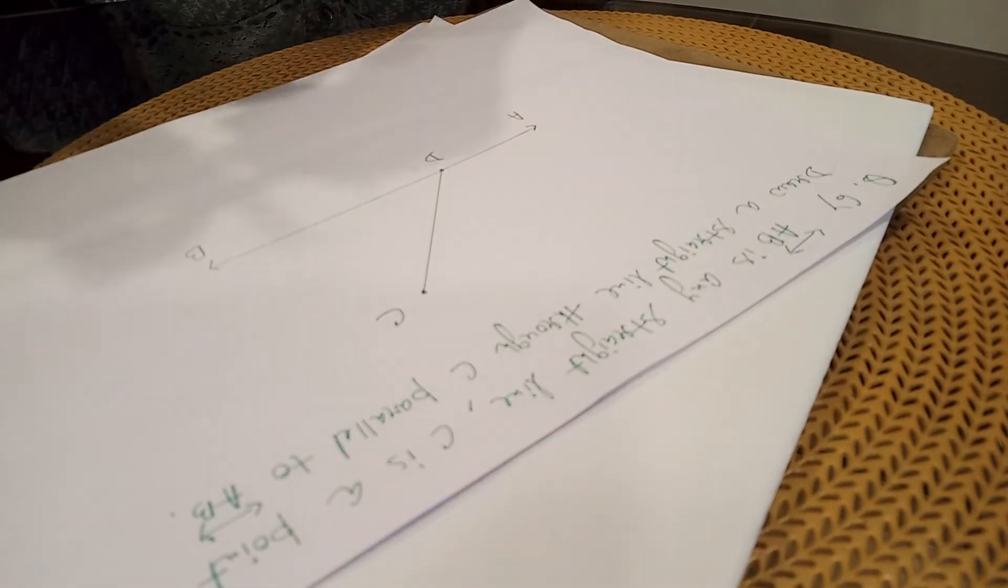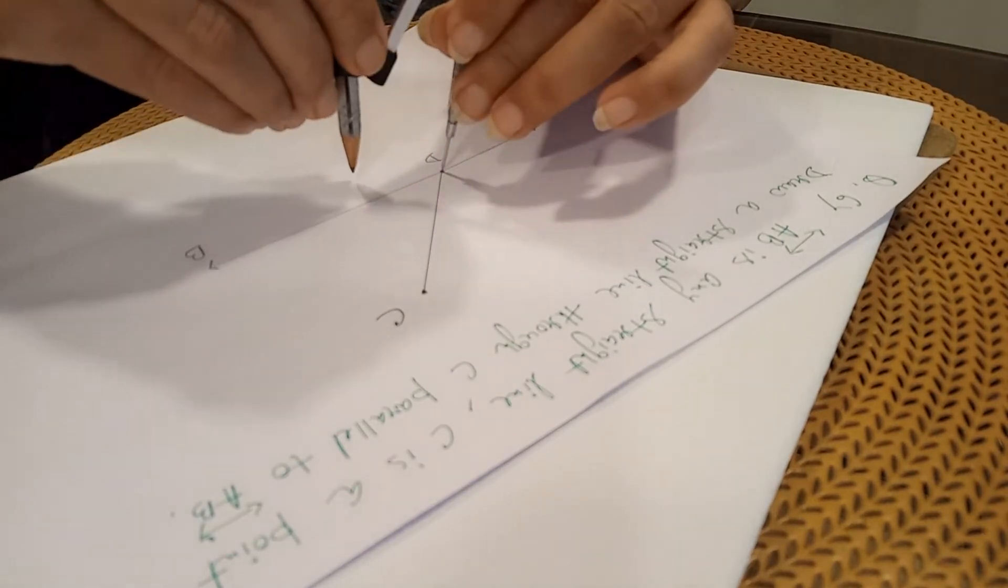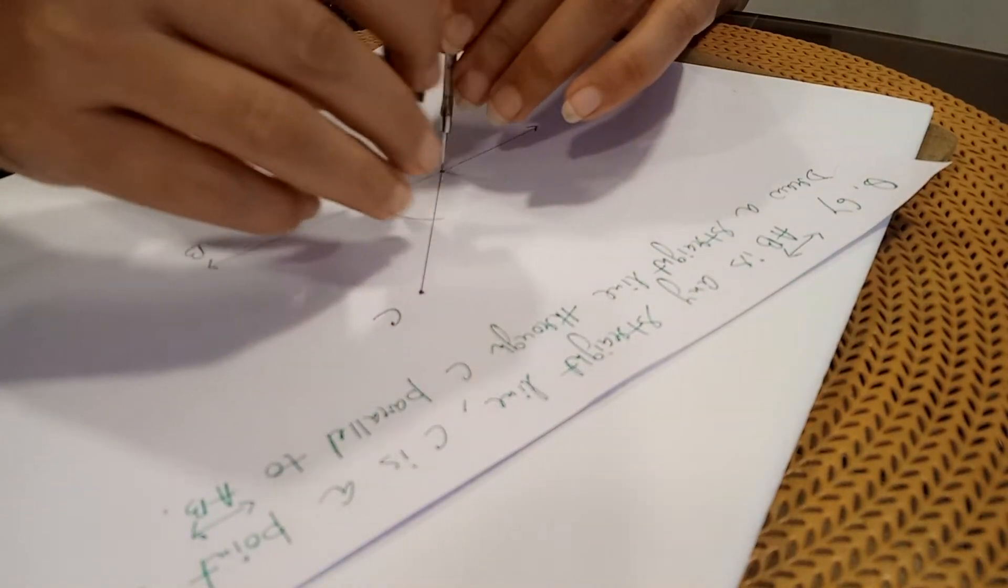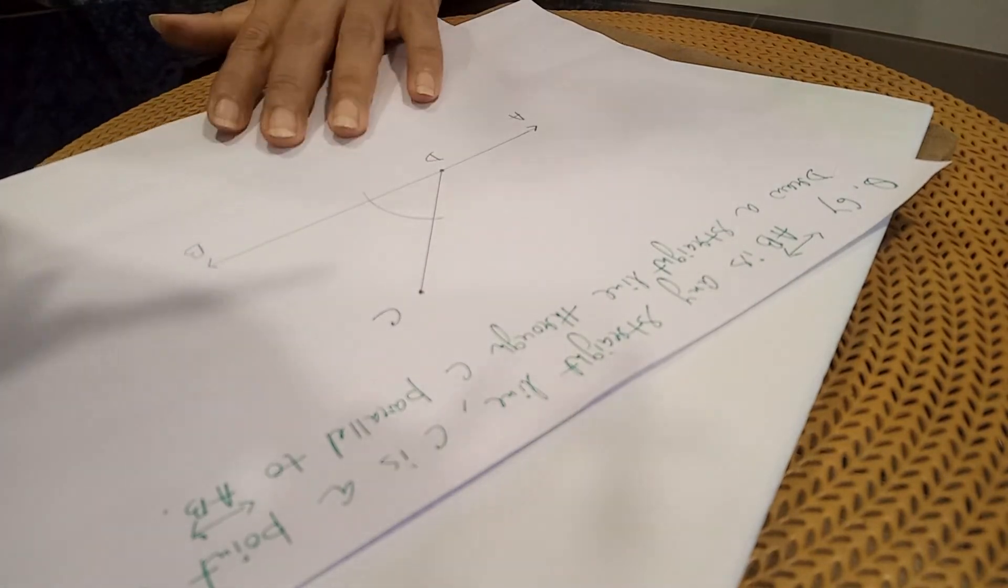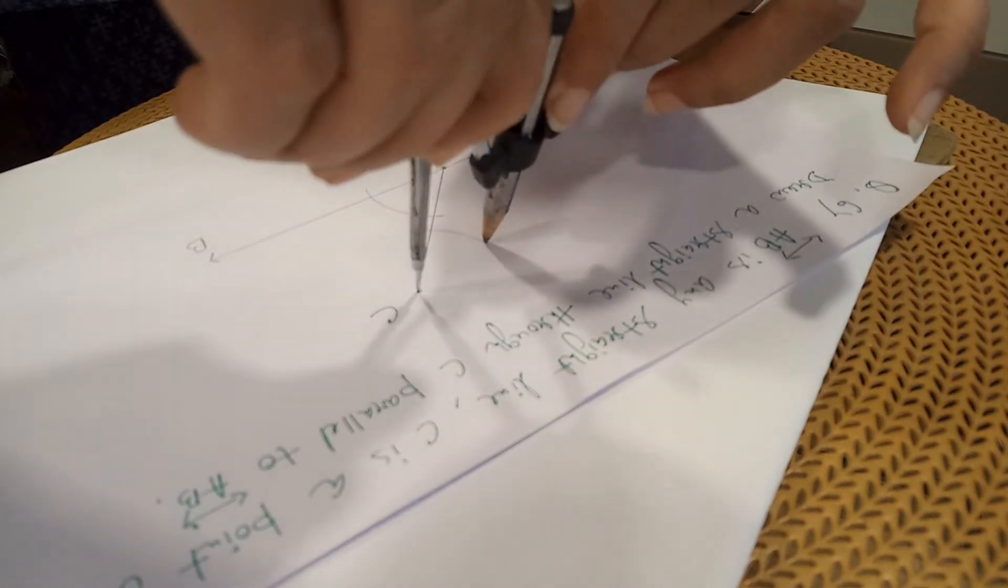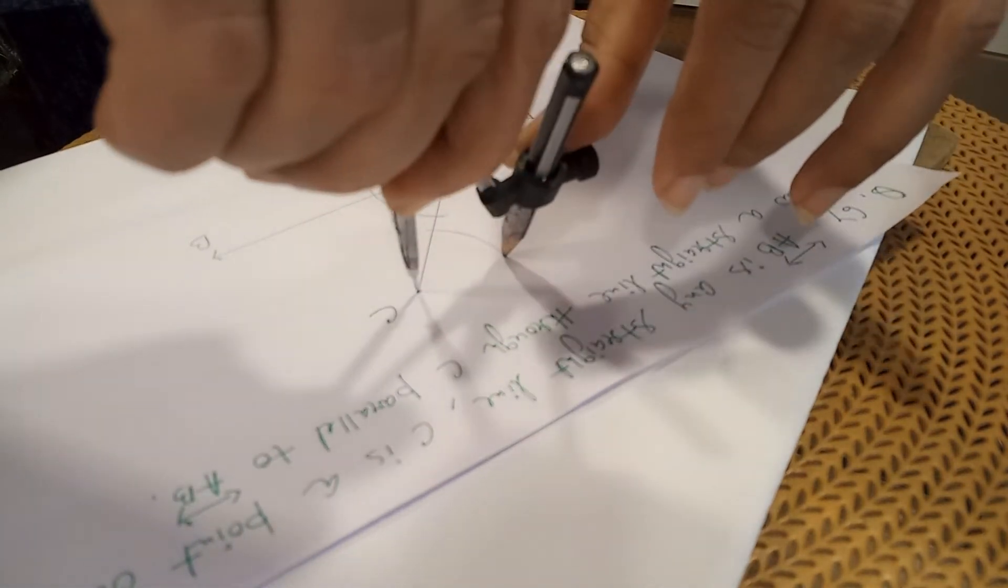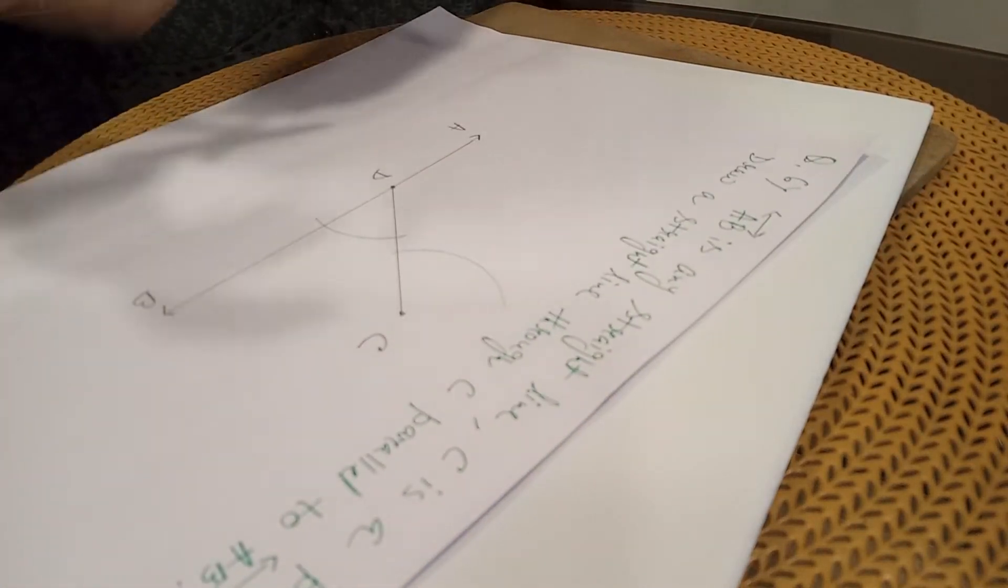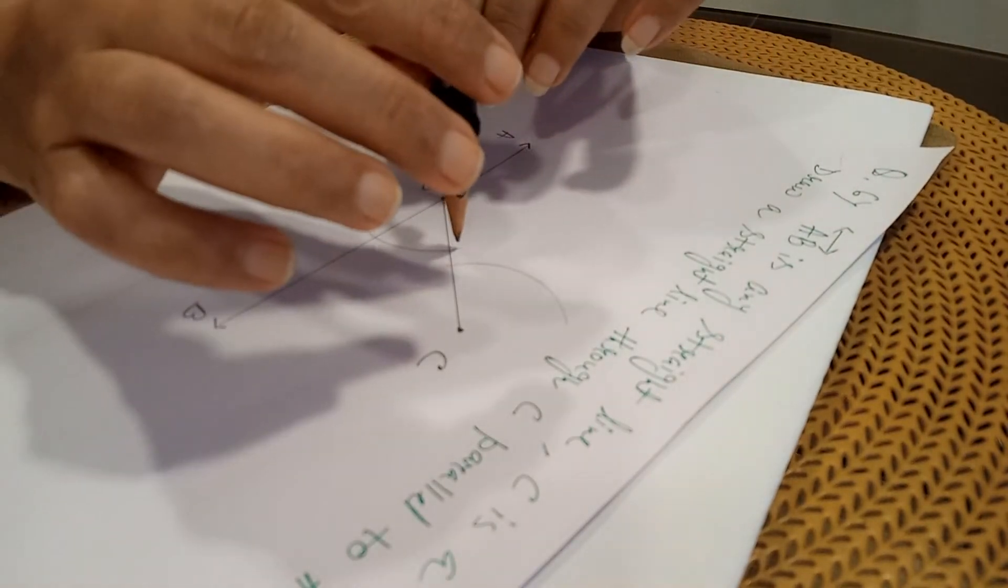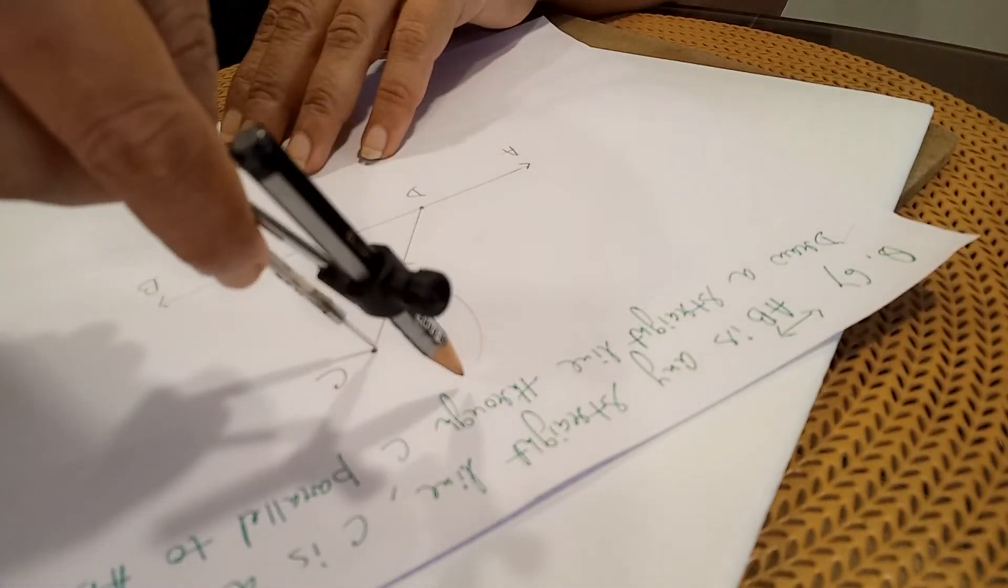Then, take your compass. Here, I am drawing one arc. First arc, you draw. And then, with the same measurement, place at C and draw another arc. What I have done? I have placed my compass at D, drawn an arc. Then, I have placed at C with the same measurement and drawn another arc.